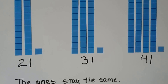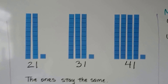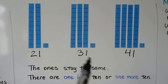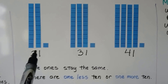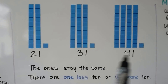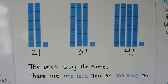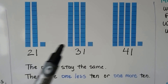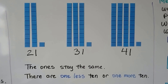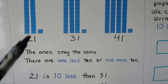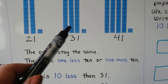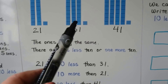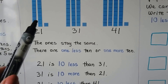Here we have 21, 31, and 41. The ones stay the same — they all have a 1 in the ones place. There are 1 less 10 or 1 more 10: this has 2 tens, this has 3 tens, this has 4 tens. 21 is 10 less — there's 1 less 10 here; there's only 2 and this one has 3. 31 is 10 more than 21 — it has 1 more 10 than that one.